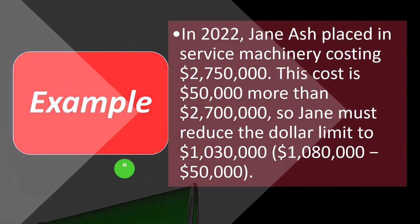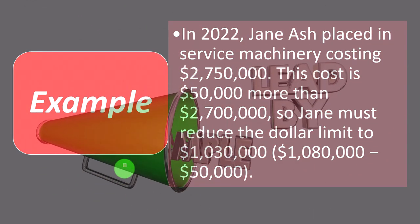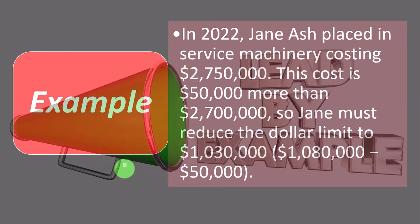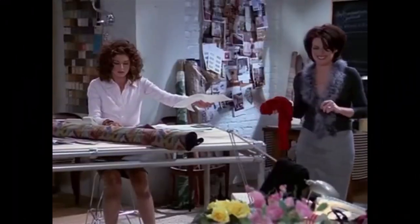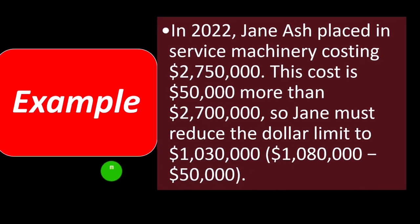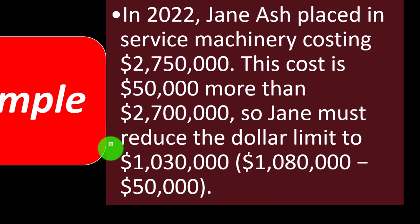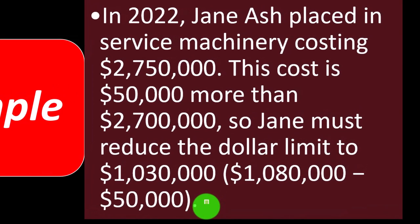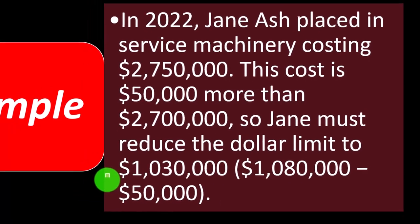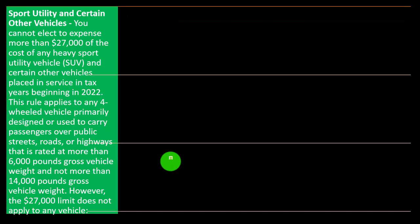Example: in 2022, Jan Ash placed in service machinery costing $2,750,000. This cost is $50,000 more than the $2,700,000 threshold. So Jan must reduce the dollar limit — which is $1,080,000 — by that $50,000 excess. That means Jan's total available Section 179 deduction has been reduced to $1,030,000.